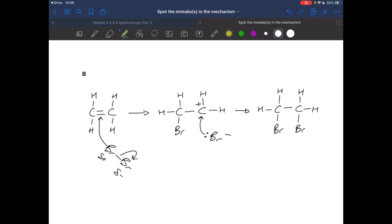Mechanism B, there's actually only one mistake in this one, and it is the direction of that curly arrow. It should be coming from the pi bond in the double bond to the slightly positive bromine. So just one mistake in B.